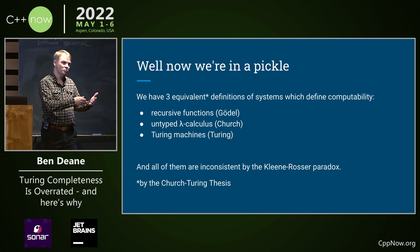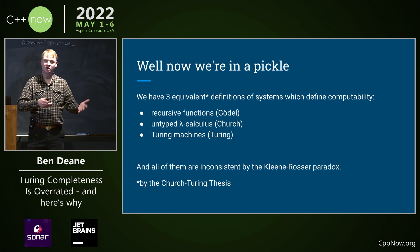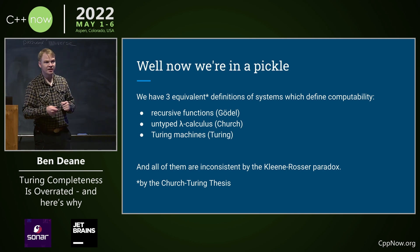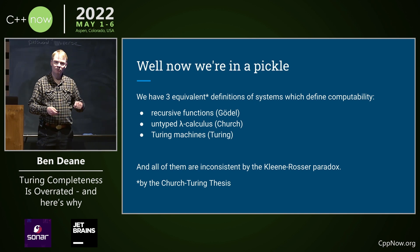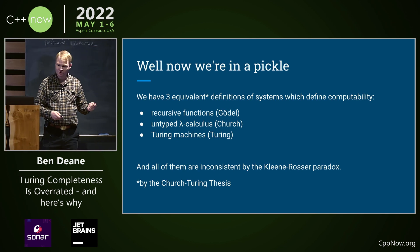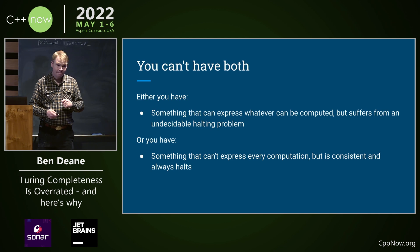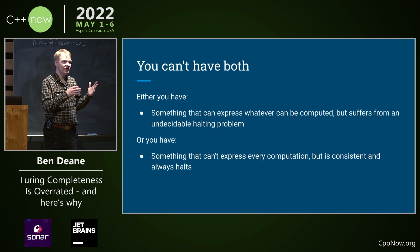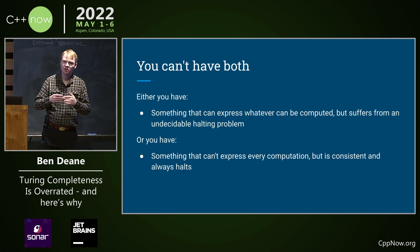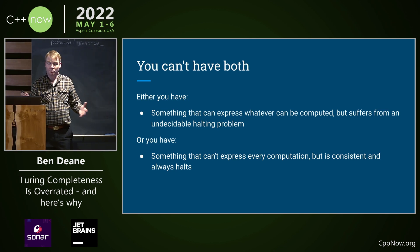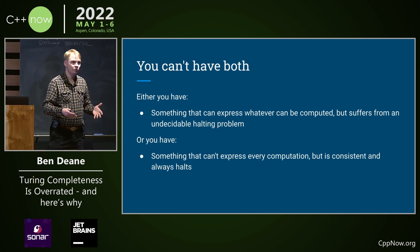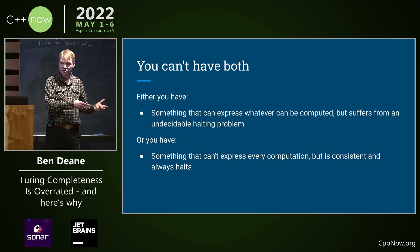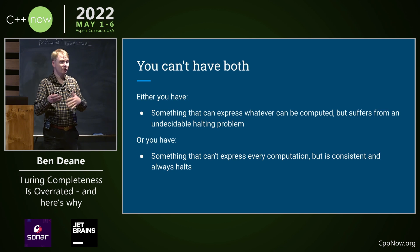The Y-combinator allows self-reference in the same way that the Russell paradox allows sets to contain sets. The fix for the Russell paradox, in some sense, is to introduce the hierarchy of sets so that sets cannot contain sets. And the fix for the inconsistency is to introduce types in the lambda calculus — so we get the simply typed lambda calculus. You can either have a language that can express anything you can compute but suffers from the undecidable halting problem, or you can have something that can't express every computation but is consistent and always halts.